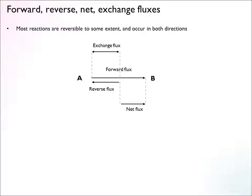There's also a circulating back-and-forth, ping-pong type of flux called the exchange flux — the amount of material going back and forth between the two metabolites. These different fluxes are important to distinguish between, because sometimes we can measure only a net flux, sometimes only the forward or reverse flux but not the net, and sometimes we can also see the exchange fluxes. It depends on which measurement methods we have.